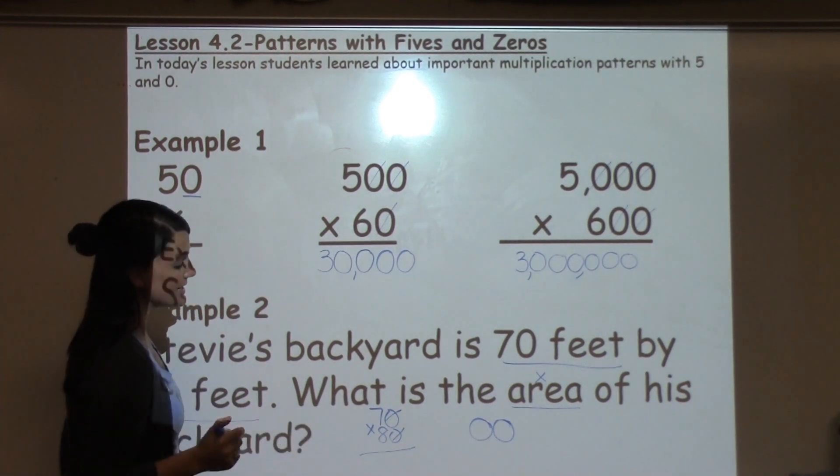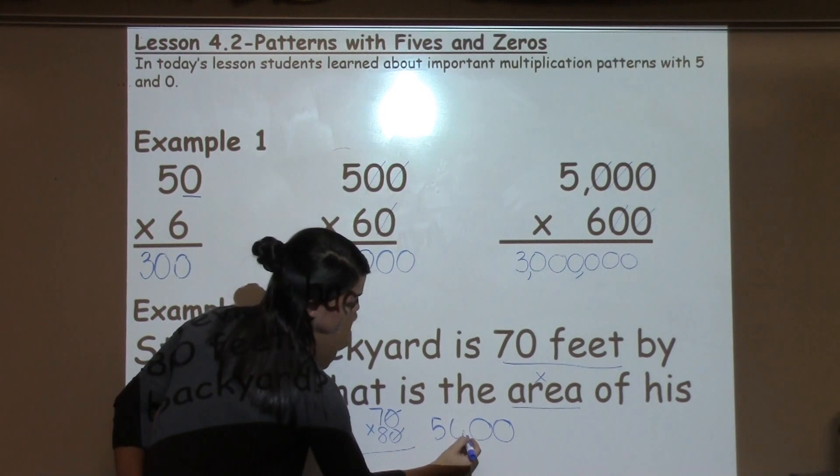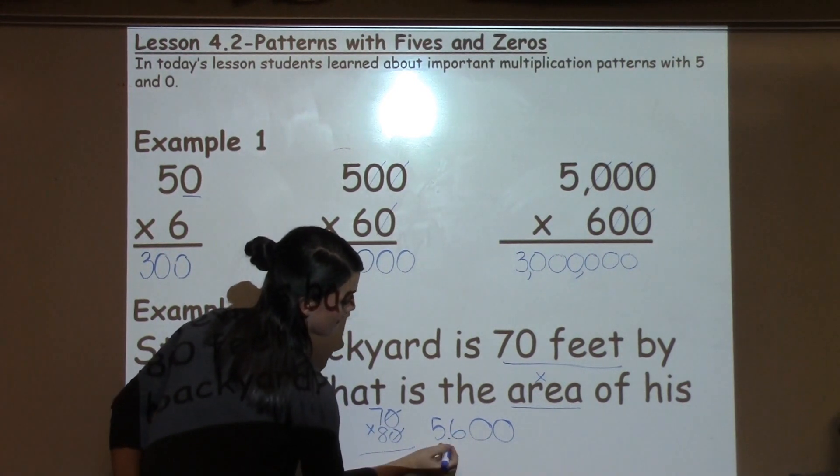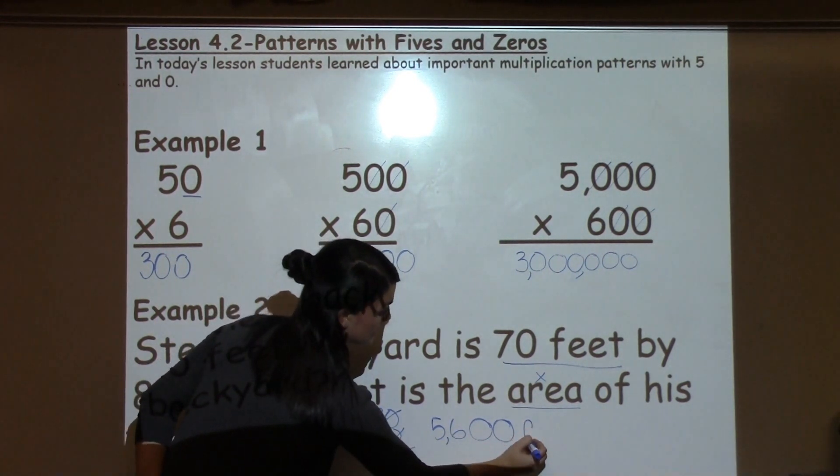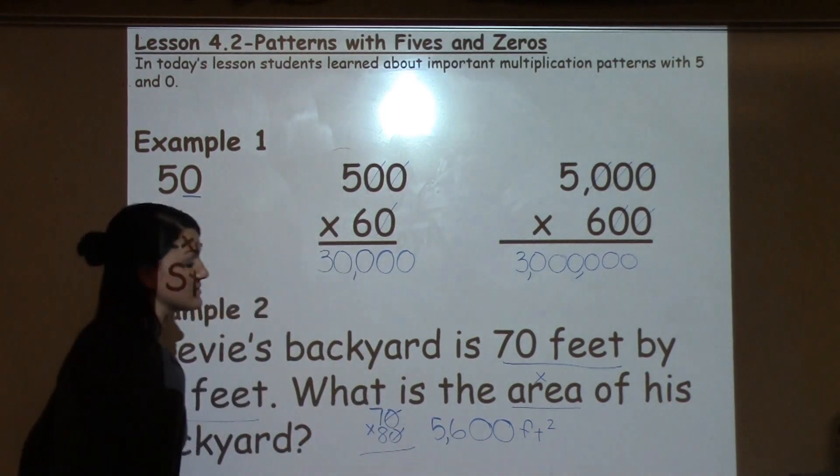after I find out what 7 times 8 is. 7 times 8 I know is 56. I have the 2 0s on the back for a final answer of 5,600 feet squared because we're working with area.